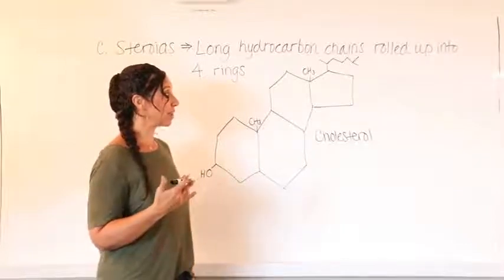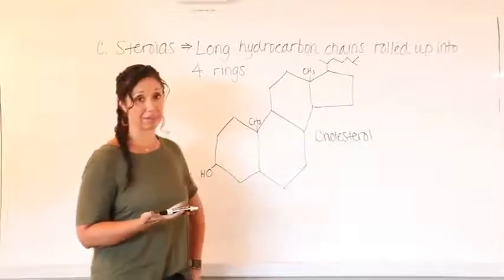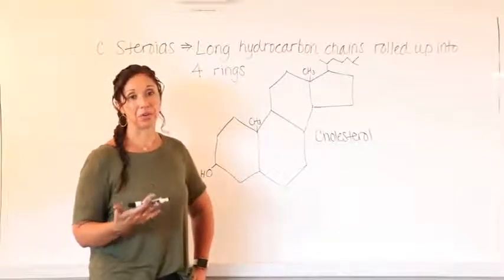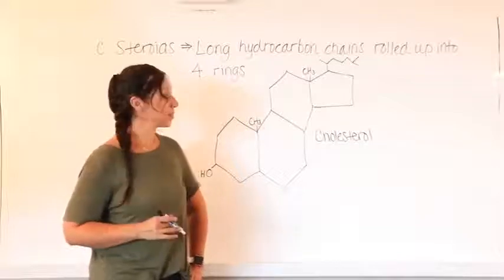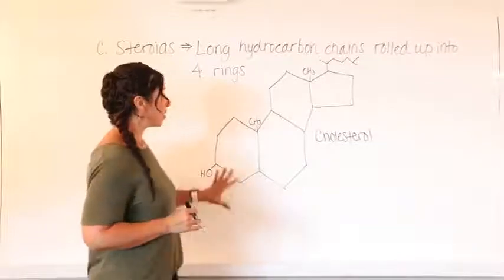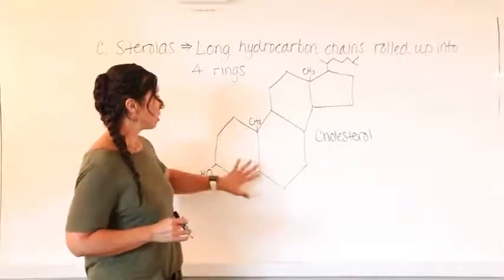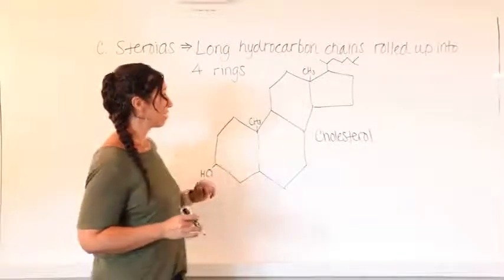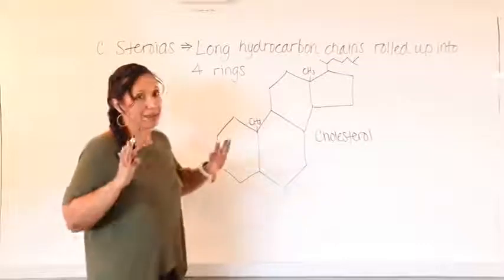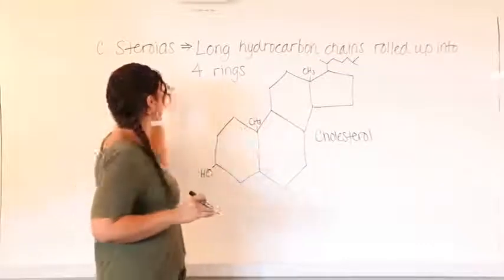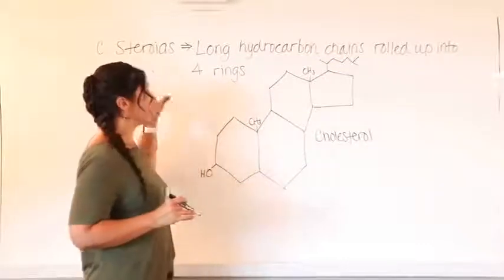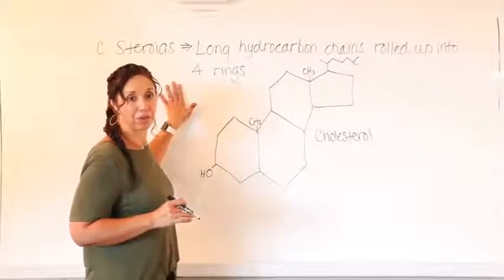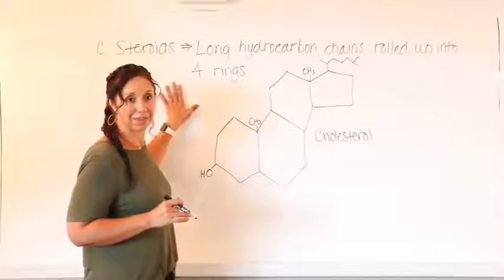If you ever study the endocrine system, that's all about how different hormones and steroids affect your body. So know that if you ever see a four-ring structure like this, automatically think cholesterol, steroids — long chains of hydrocarbons rolled up into four rings like that.